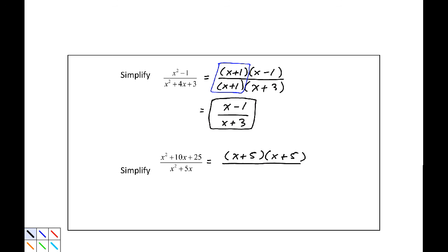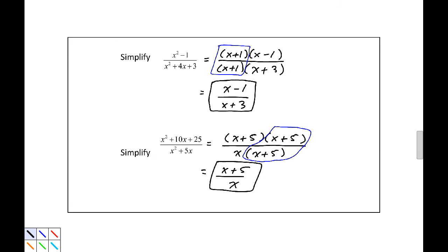And our denominator has two terms, so we have to look for a greatest common factor. And it looks like that we can factor an x out. So x parentheses x plus 5 is how x squared plus 5x factors. We have a 1 of x plus 5 over x plus 5, and this reduces to x plus 5 as a numerator divided by x as a denominator.